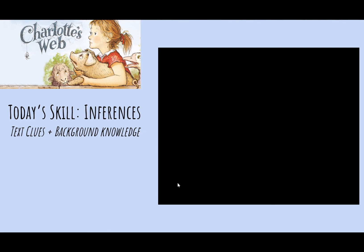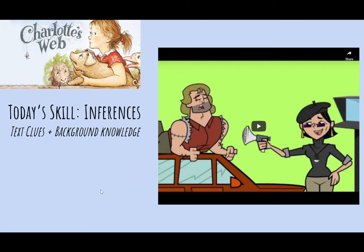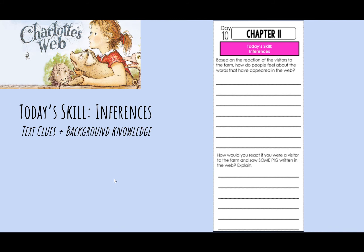In that video we learned that making an inference means the actor took the information from what he read — his lines were his text clues — and combined it with what he already knew about when banks are robbed and what happens to the people. He put those two things together — what he read and his background knowledge — and made an inference that they were probably going to jail and would need a good lawyer. He was able to teach his director what it meant to make an inference.